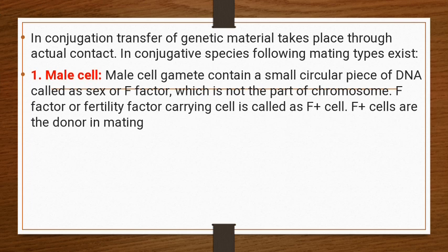In conjugation, transfer of genetic material takes place through actual contact. In conjugative species, the following mating types exist: the male cell (F+ cell) contains a small circular piece of DNA called the sex or F factor, which is not part of the chromosome. The F factor or fertility factor-carrying cell is called an F+ cell, and F- cells are the recipient in mating.